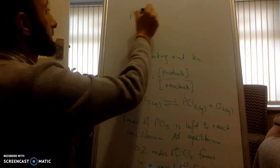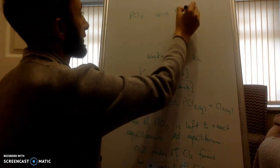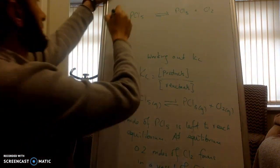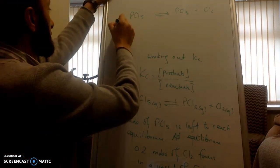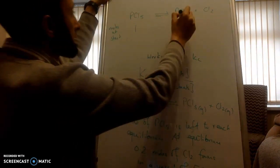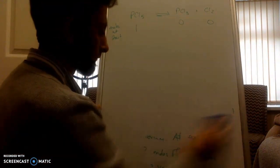Right, so PCl5 decomposes into PCl3 and chlorine. Let's do a table: moles at start, 1, 0, 0.